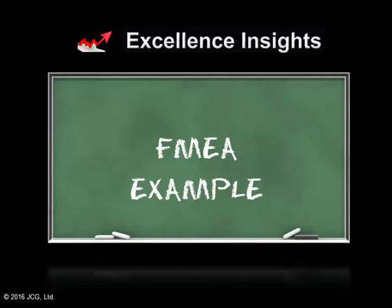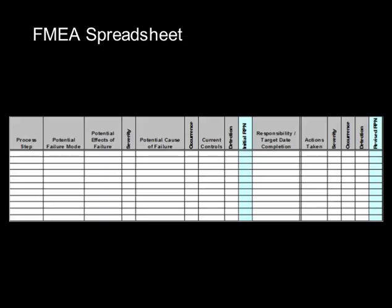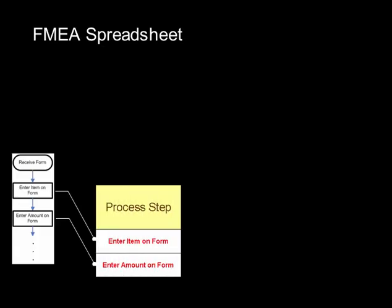Hey, it's Jeff Cole with a quick example on how to fill out an FMEA. In the prior video we took a look at a typical FMEA template, and you will simply fill this out going from left to right. The first column is the process step. So you would take your process flowchart — in this case we have a process for filling out a form — and you're going to simply copy those steps into the column called process step.